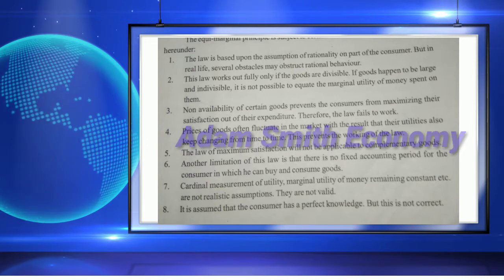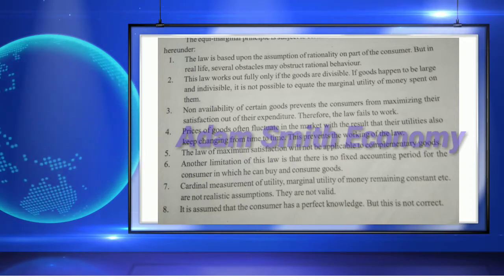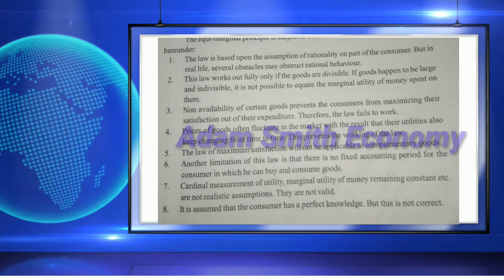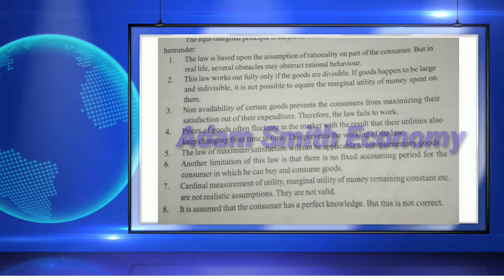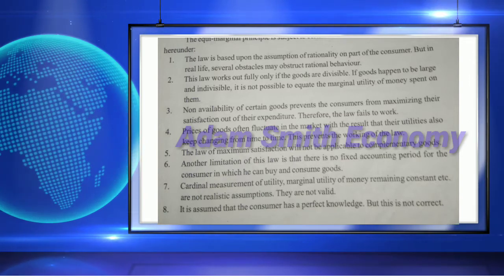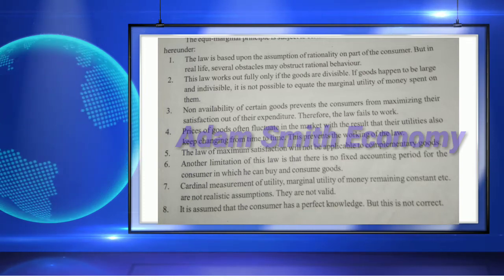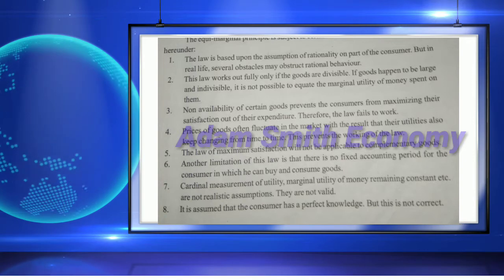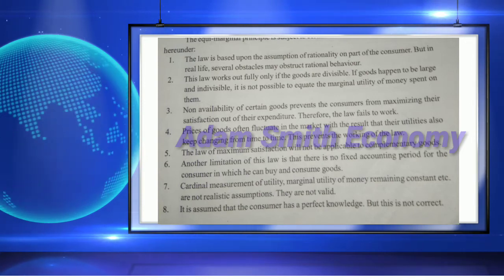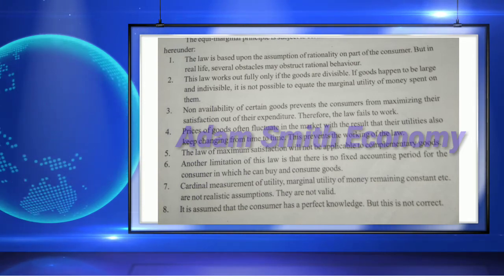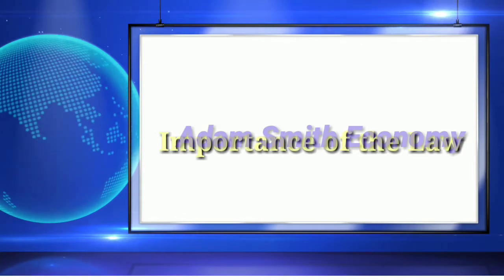Fifth, the law of maximum satisfaction will not be applicable to complementary goods. Sixth, another limitation is that there is no fixed accounting period for the consumer in which he can buy and consume goods. Seventh, cardinal measurement of utility and marginal utility of money remaining constant are not realistic assumptions and are not valid. Eighth, it is assumed that the consumer has perfect knowledge, but this is not correct.